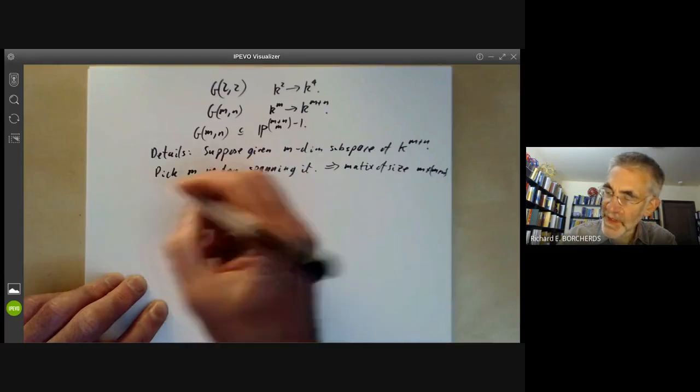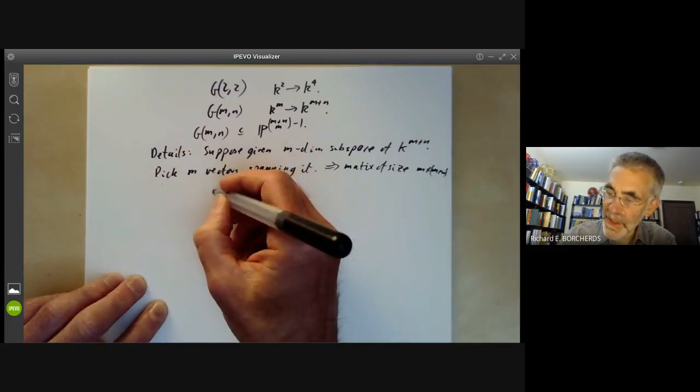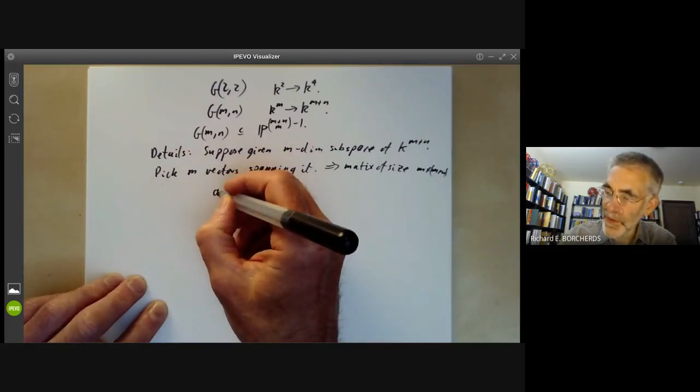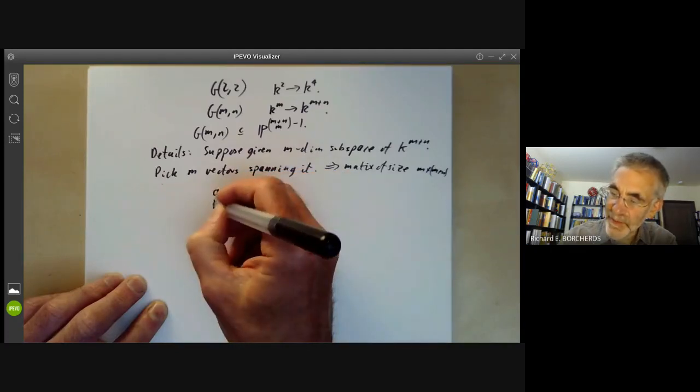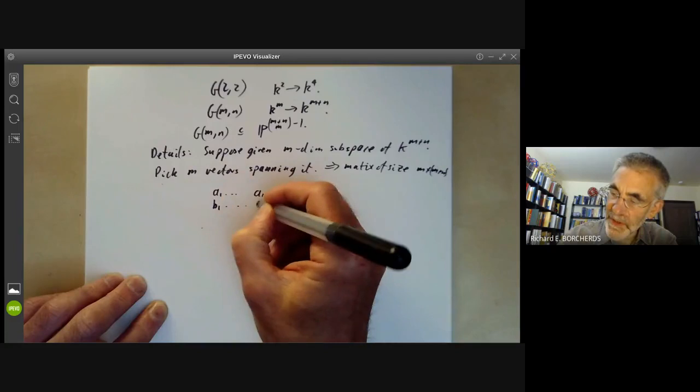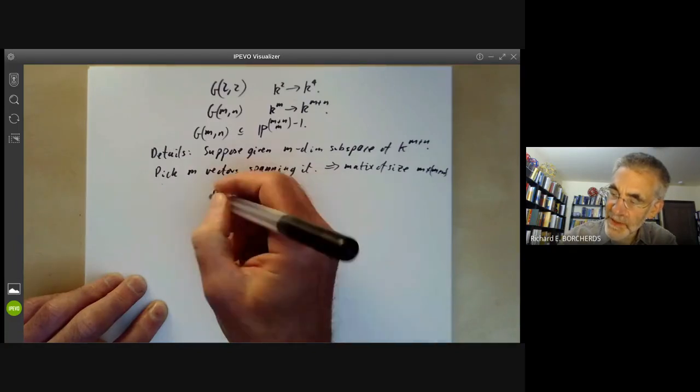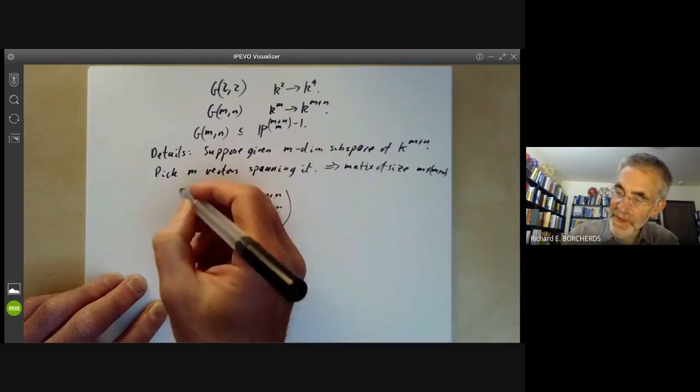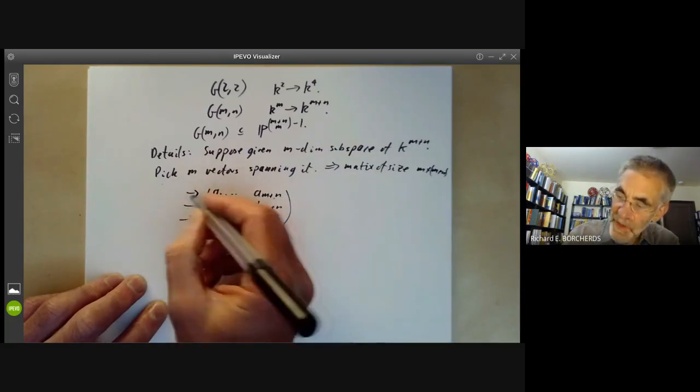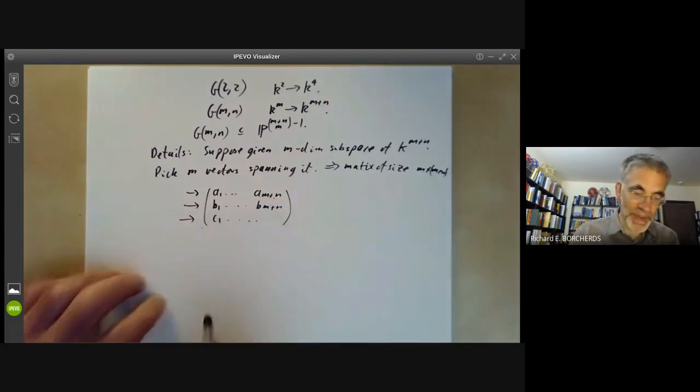So we might have a vector with points A1 up to A_{M+N}, B1 up to B_{M+N}, and so on, where these are the coordinates, where each row forms the coordinates of one of these points.